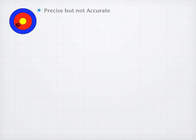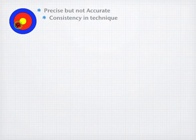This next target is precise but not accurate. Can you see why it's precise? Well, the precision comes in the fact that we have this small grouping. Now in this case, this is indicating a consistency in technique. So in other words, you're doing a really good job of what you're doing, but there is some error which is causing your measurements to be off.